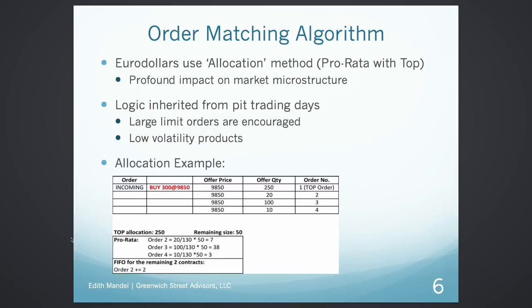In this example, the incoming buy was for 300 contracts; there was a top order of 250, so the 250 immediately went to that top order. The remaining 50 gets allocated according to pro rata. After the top order is filled, none of the remaining residuals are top orders anymore.